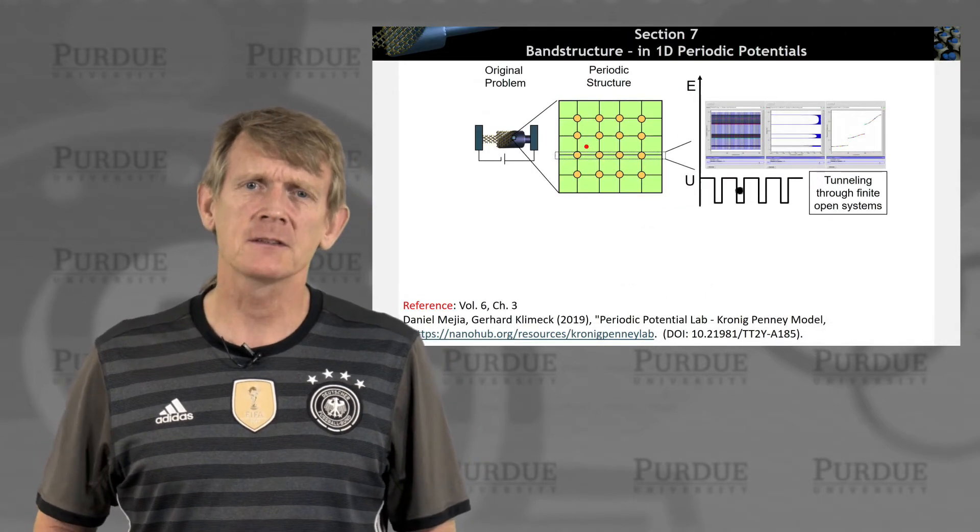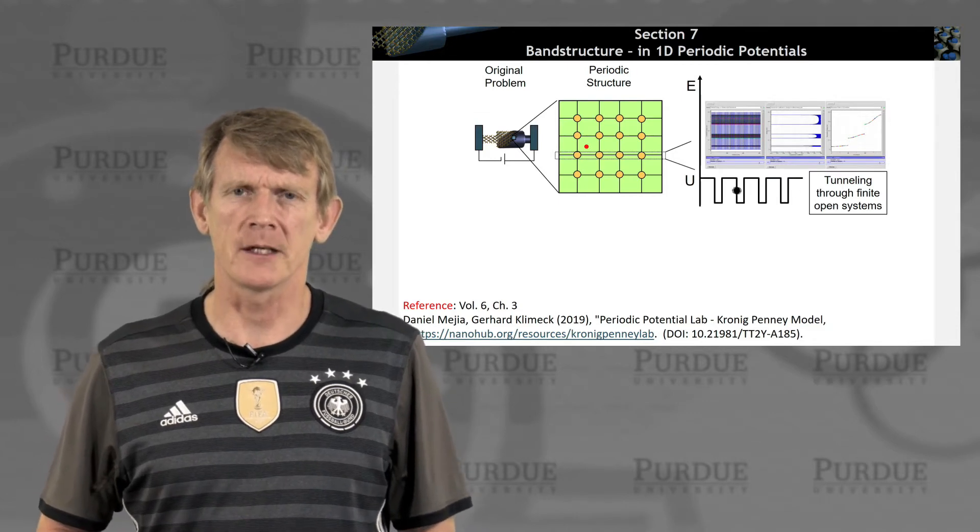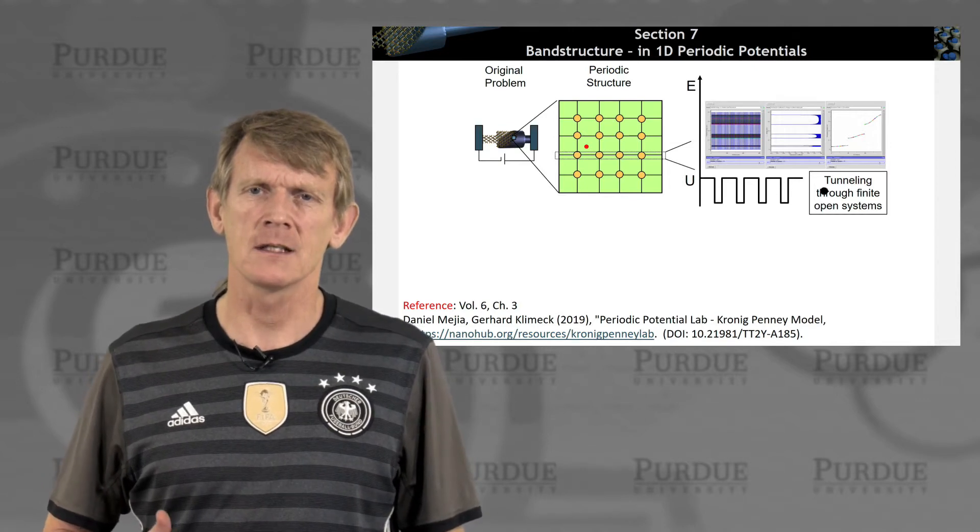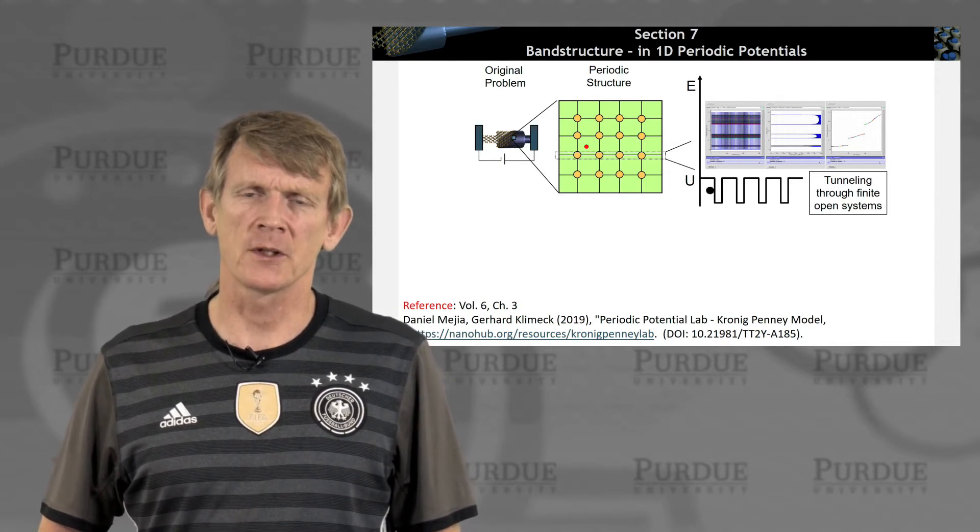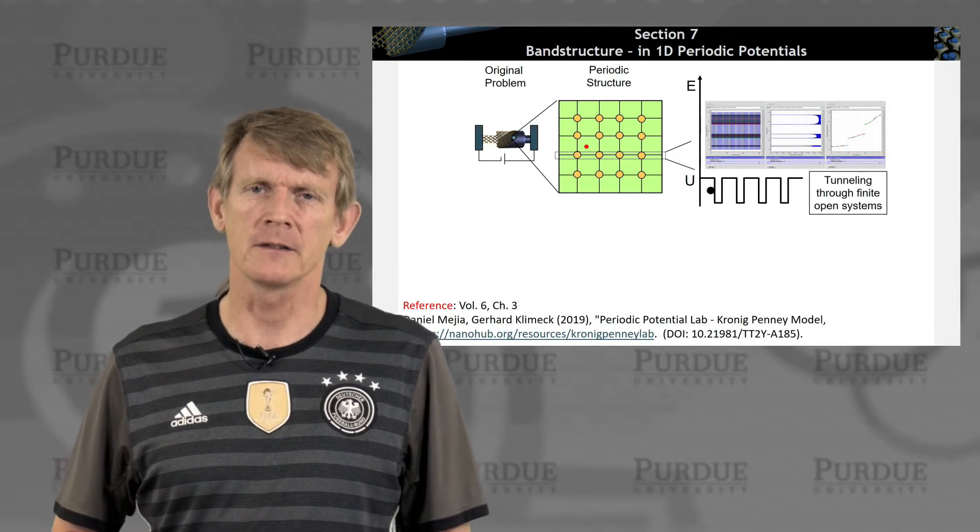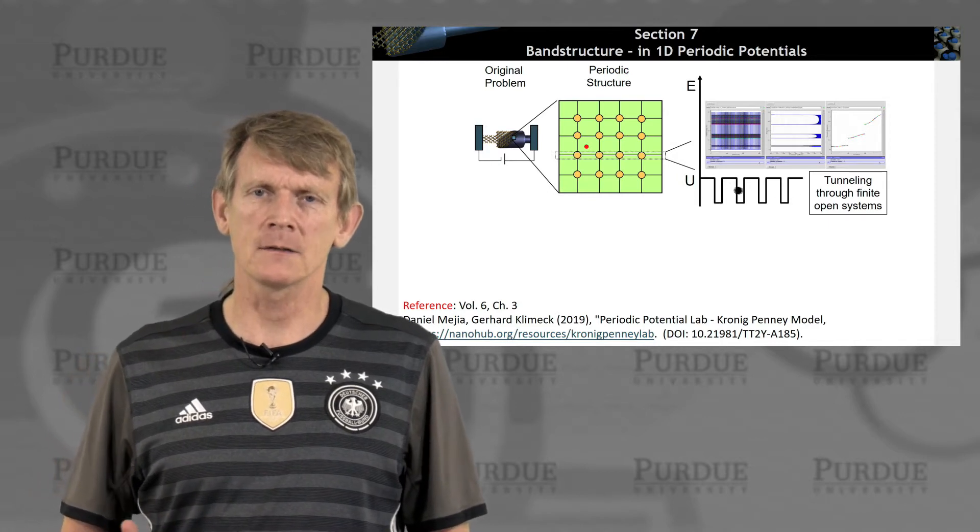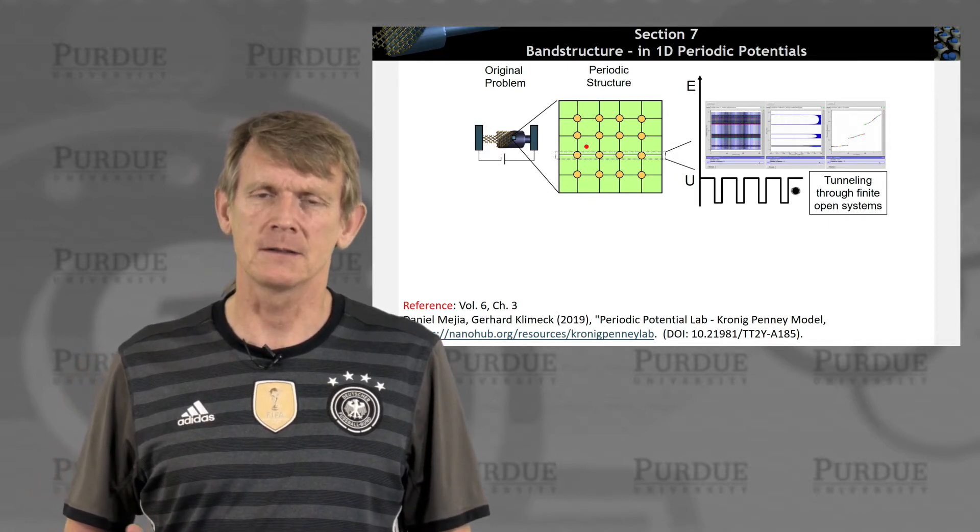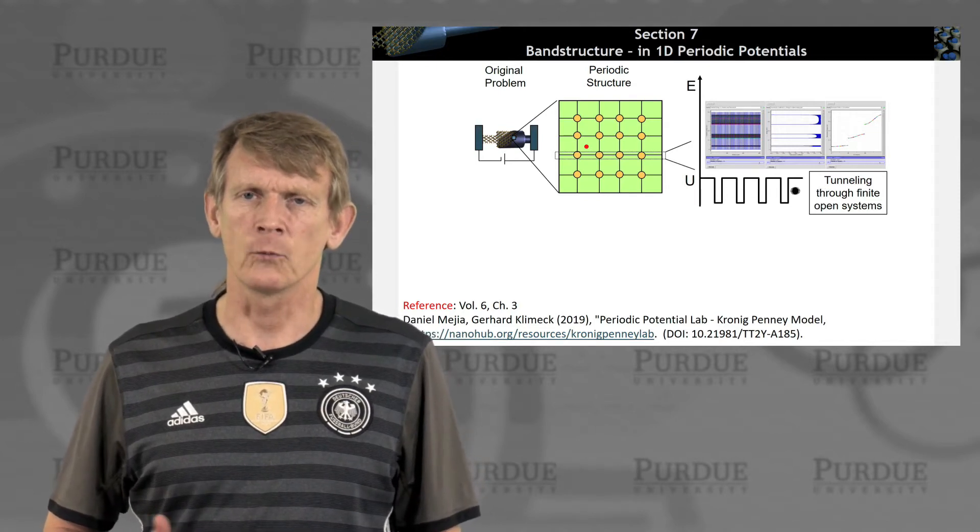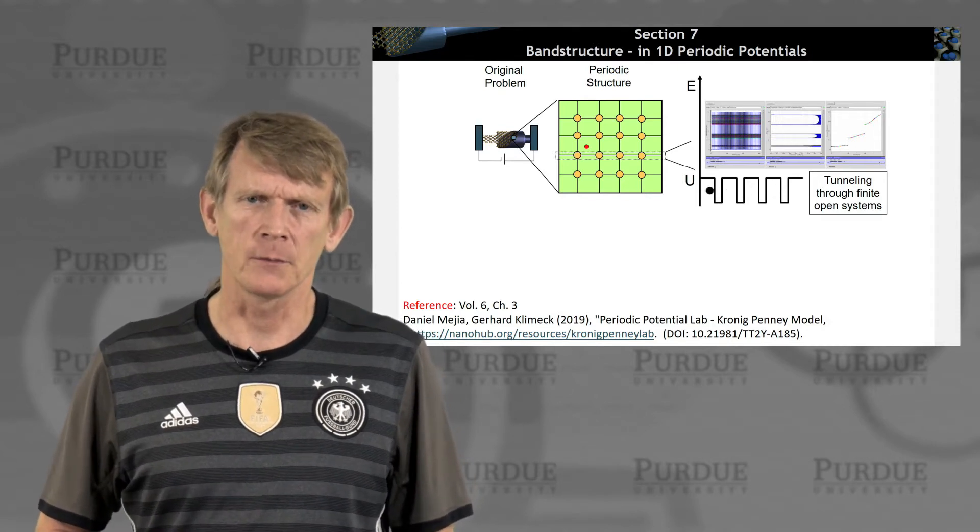In the previous section, we talked about tunneling through multiple barriers, and this tool really showed nicely how you can have transmissions in bands, this PCPBT tool on NanoHub. You could see how there were bands forming deep in the wells, there were narrow bands, and the bands got wider and broader closer to the top of the barriers.